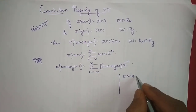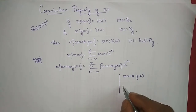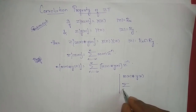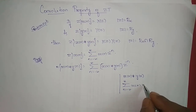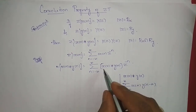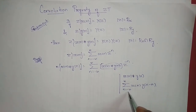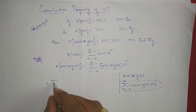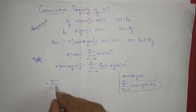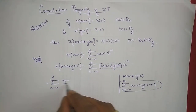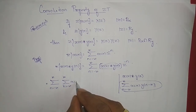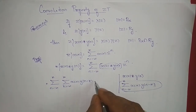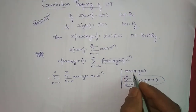We know that x of n convolved with y of n is given by summation k varying from minus infinity to infinity of x of k times y of n minus k. So instead of writing this convolution directly, I will write the convolution equation. This becomes summation n varying from minus infinity to infinity, summation k varying from minus infinity to infinity, x of k times y of n minus k into z power minus n.